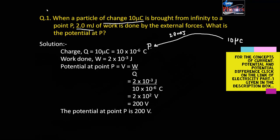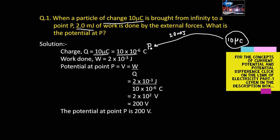Let us see the solution. A charge of 10 microcoulomb is brought from infinity to a particular point P. We will convert 10 microcoulomb: 10 microcoulomb equals 10 into 10 to the power minus 6 coulomb. Work done is 2 milli-joule, so converting milli-joule: work done equals 2 into 10 to the power minus 3 joule.